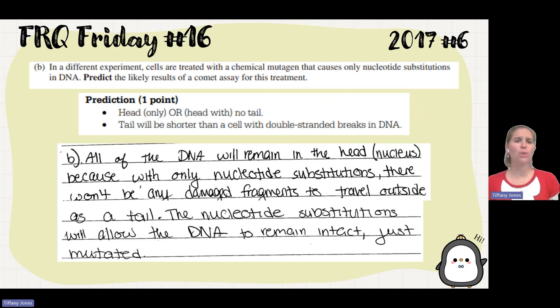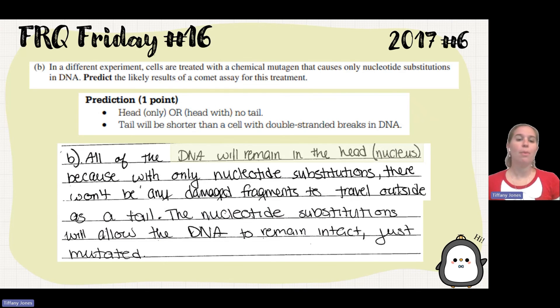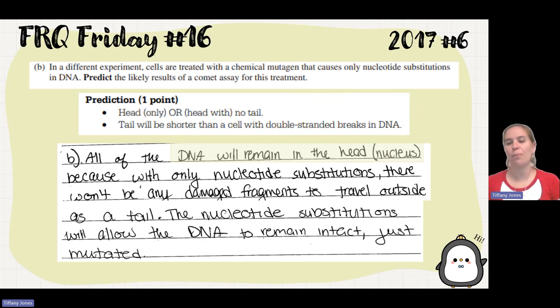The student answer states: all the DNA will remain in the head — the nucleus — because only nucleotide substitutions occur. There won't be any damaged fragments to travel outside to form a tail. Nucleotide substitutions allow the DNA to remain intact, just mutated.